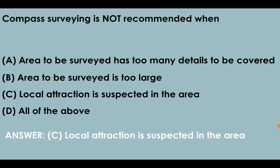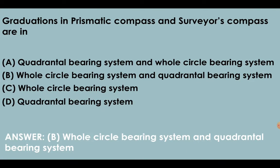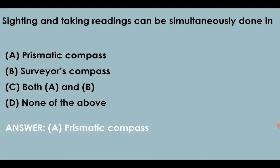Compass surveying is not recommended when local attraction is suspected in the area. Prismatic compass can be used without tripod. Graduations in prismatic compass and surveyor's compass are in WCB and quadrantal bearing system respectively. Sighting and taking readings can be simultaneously done in prismatic compass.